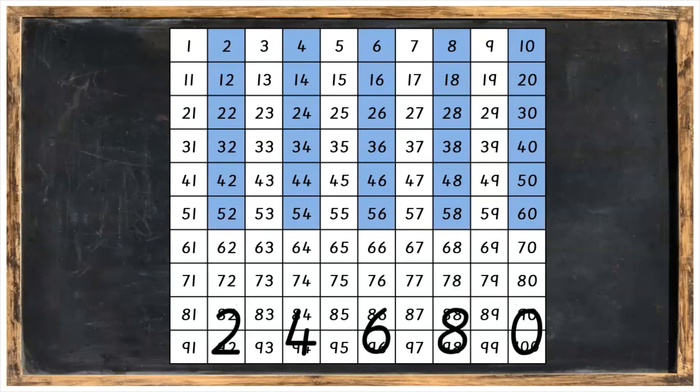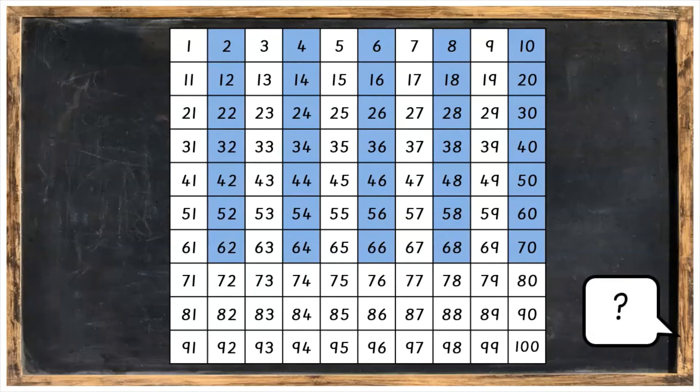And then 62, 64, 66, 68, 70. Can you think of what's next? Of course it's going to be 72, 74, 76, 78, 80.